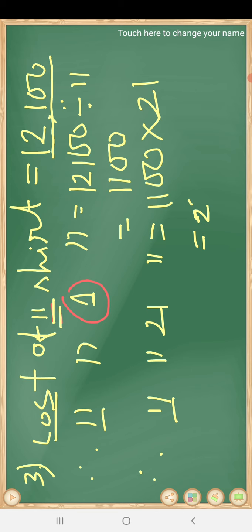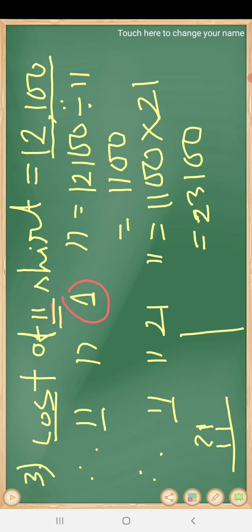Twenty one multiplied by eleven hundred gives us twenty three thousand one hundred. So the cost of twenty one shirts is twenty three thousand one hundred. Remember that.